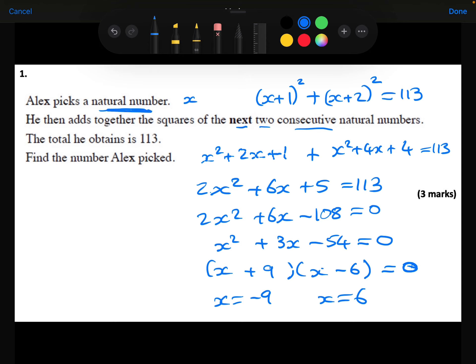But we were told that he picked a natural number, which, like I said at the beginning, means a positive integer. So it can't be minus 9. It has to be 6.